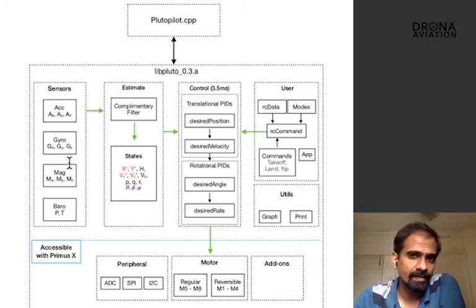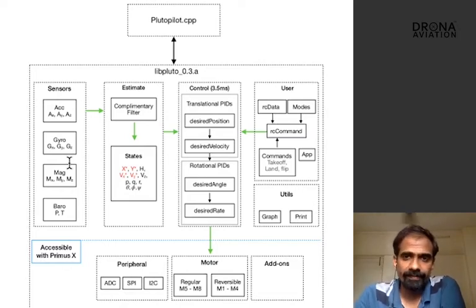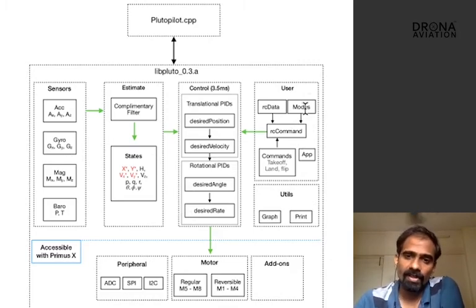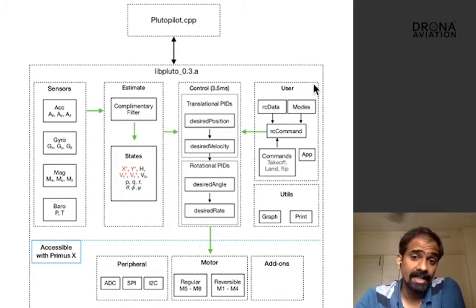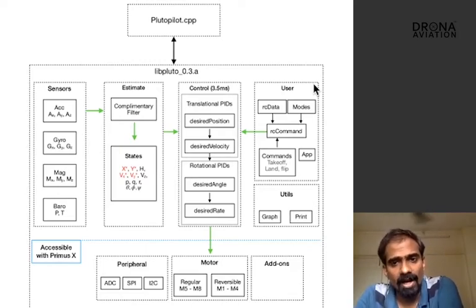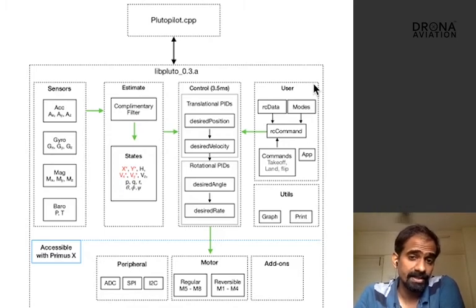Now we have got reasonable estimates of some meaningful values, or states as we call them, in the estimate block. The next thing that the drone requires is the user command. The user block is responsible for commanding what exactly the user wants — for example, what angle the drone moves at, or which mode the drone operates in. All of those commands are fulfilled by the user block. If you want to access any of those commands, we can use #include user.h in the Plutopilot file and use the relevant APIs to command the drone the way we seem fit.